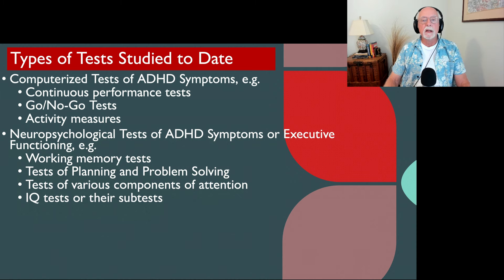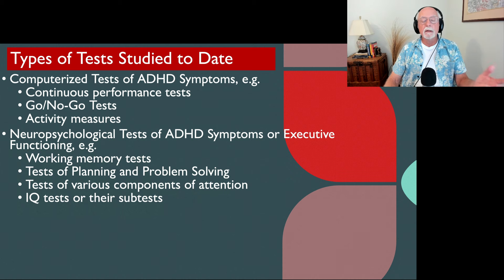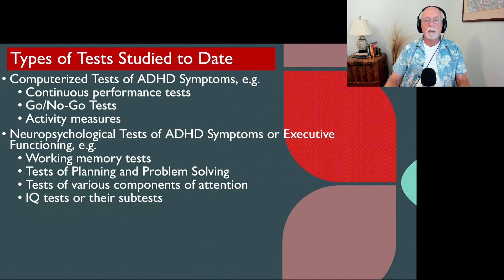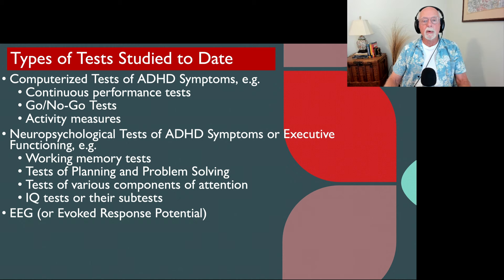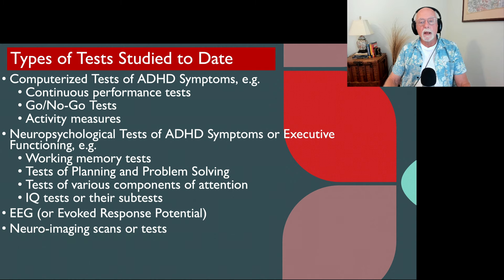The same applies to neuropsychological tests of ADHD symptoms, such as measures of executive functioning, working memory tests, tests of planning, tests of problem solving, the Wisconsin Card Sort test, and looking at categorizing particular categories of stimuli — a very old test for executive functioning. Tests of components of attention, tests of IQ and their sub-tests — none of these, despite their usefulness in group studies, can be used in clinical practice with an individual. There are studies of the EEG and also of a special kind of EEG that looks at the evoked electrical response to a stimulus in the brain — not accurate enough for clinical practice, even though there may be group differences in certain EEG bandwidths between ADHD and typical people.